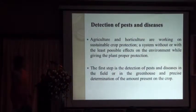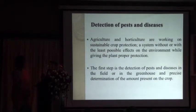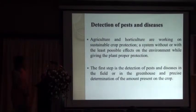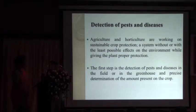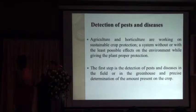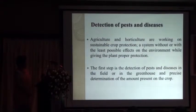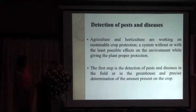For example, detection of pests and diseases: mostly in agriculture and horticulture, for sustainable crop production we use these techniques. The first step is the detection of pests and diseases in the field and also in the greenhouse, and then determining the amount of insects present in the crop.